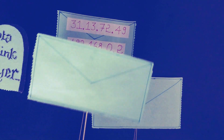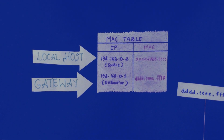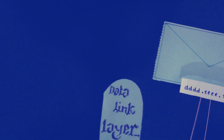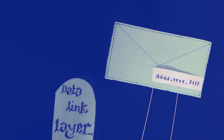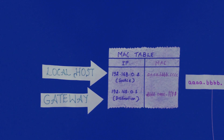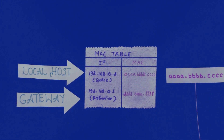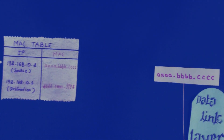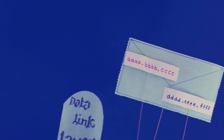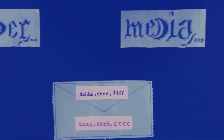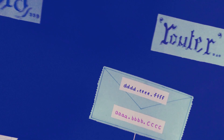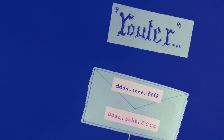The encapsulation process takes place in the data link layer. The local address information is added to each of the packets, enabling the packet to get to the local router and out to the web. The address of the gateway and the address of the local host are added to each packet. Frames are then passed from the sender through the media to the router, where media is present in the physical layer.